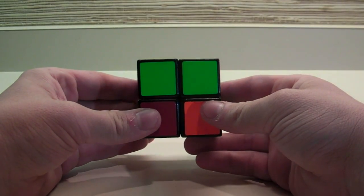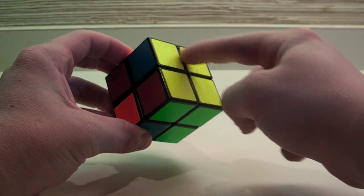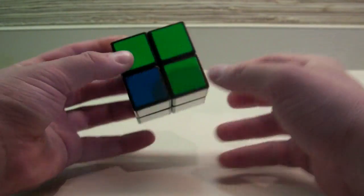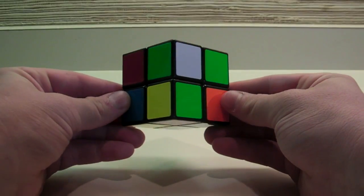And then you use one algorithm to permute every piece and put them in their correct spot. In this case, I need to switch these back two pieces on the top layer and these two pieces diagonally. So I'm going to use a single algorithm to solve the cube. Simple, right?